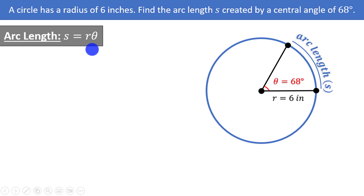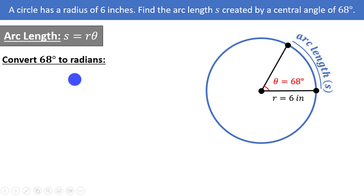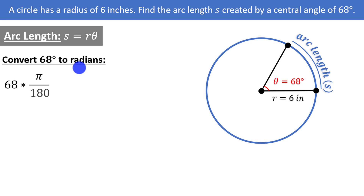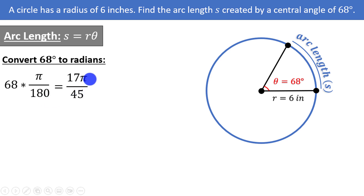Be very careful — this formula only works for radians, and we have degrees here. So we must first convert 68 degrees to radians. To convert to radians, multiply by π/180, since radians are expressed in terms of π. So 68 × (π/180) simplifies — both 68 and 180 are divisible by 4 — giving us 17π/45. So 68 degrees equals 17π/45 radians. Now we're ready to plug into the formula.